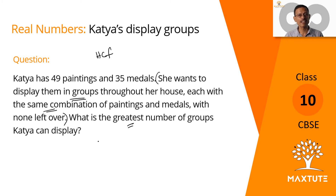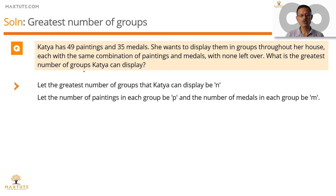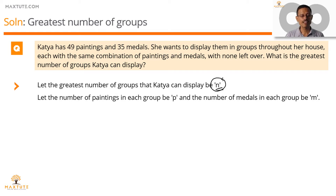Let's go about it in a systematic fashion and then check out whether we come to the same conclusion. Let's start by assigning variables — we're going to assign three variables. The greatest number of groups into which she can divide them, let's assign the variable N. So our final answer is the value of N. The number of paintings in each group is going to be P, and the number of medals in each group is going to be M.